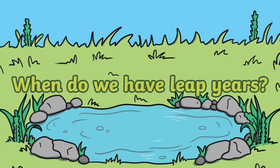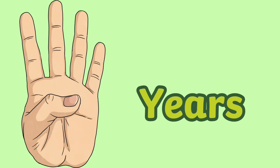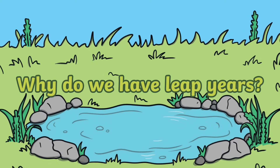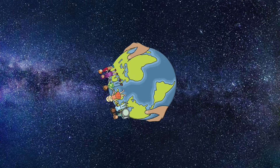When do we have leap years? The extra day in a leap year is the 29th of February. There is a leap year every four years.